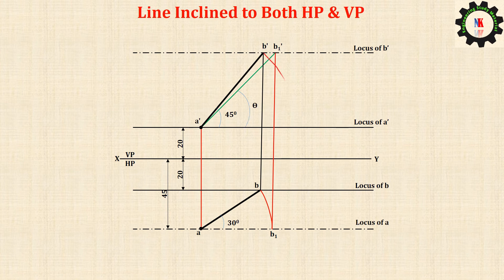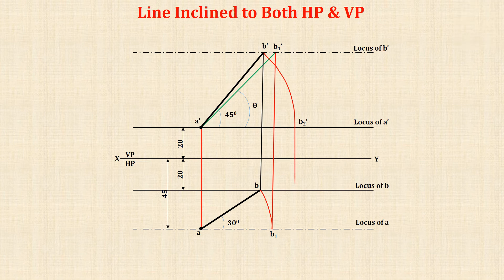With a dash as center and a dash B1 dash as radius, draw an arc to cut the locus of a dash. From B2 dash draw a vertical projector to meet the locus of B.